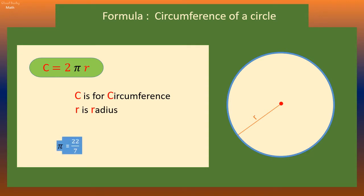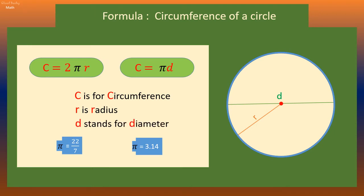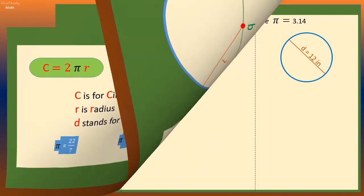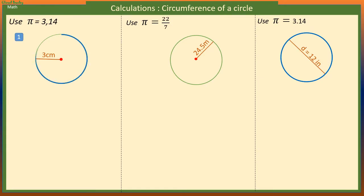When the diameter is given, we can use the formula C is equal to πd. D stands for diameter. We want the circumference for this circle. Its radius is 3 centimeters.